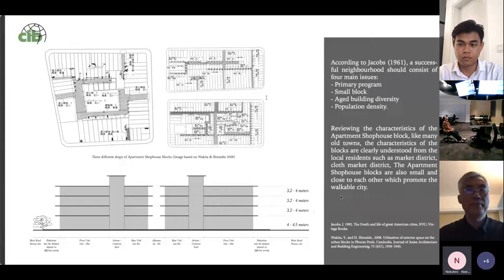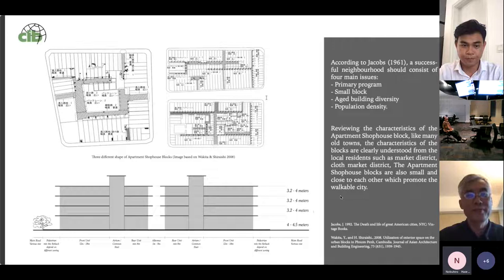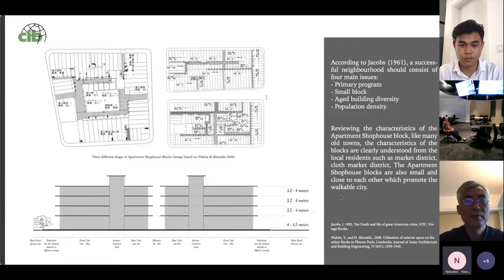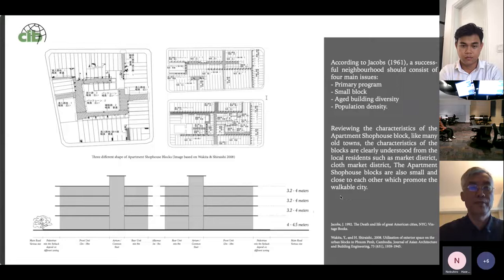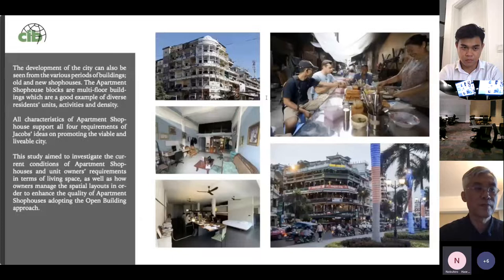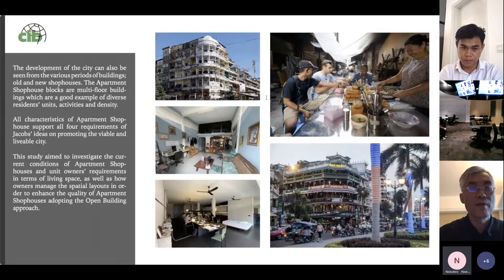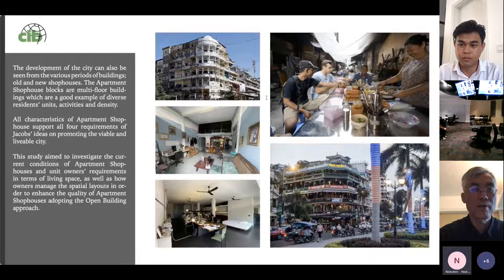Inspired by Jane Jacobs' 'The Death and Life of the Great American City,' a successful neighborhood should consist of four main issues: primary program, small block, building diversity, and population density. By reviewing the characteristics of the apartment shophouse block and unit, it is clearly understood from local residents and the market — because many programs and apartment shophouses belong also to small and close-together units, promoting walkability. The development of the city can be seen from various periods of the building, showing diversity in residential units, activities, and density.